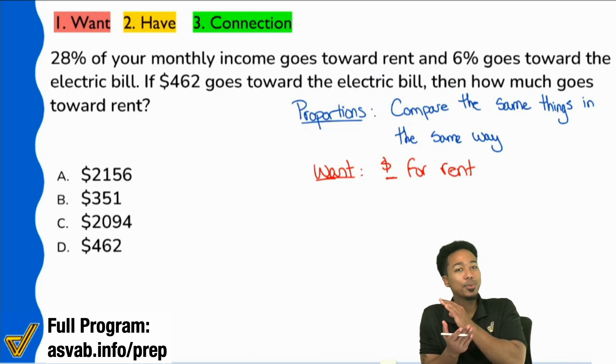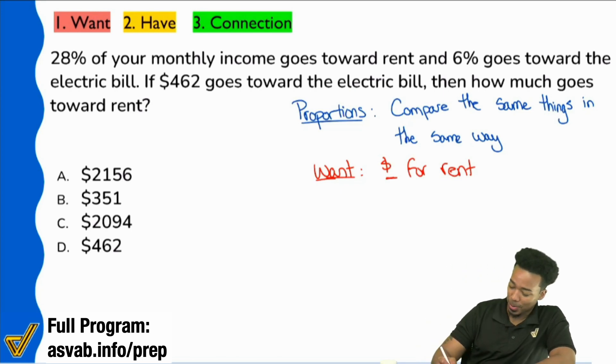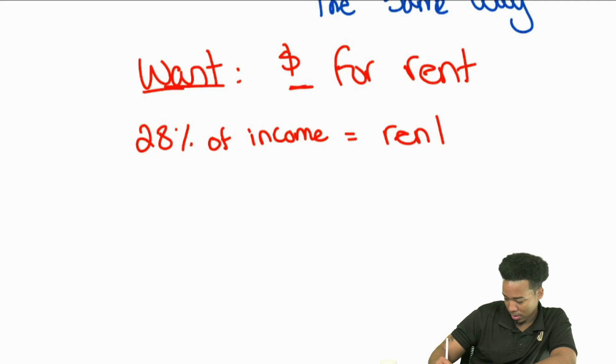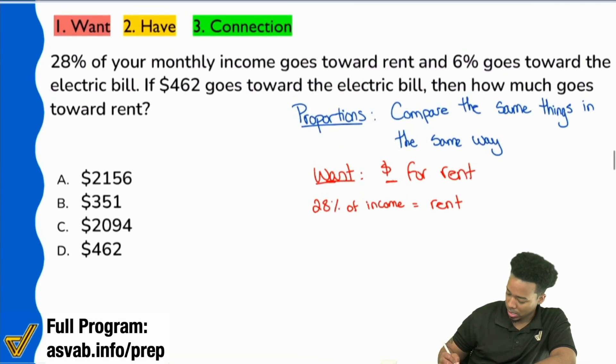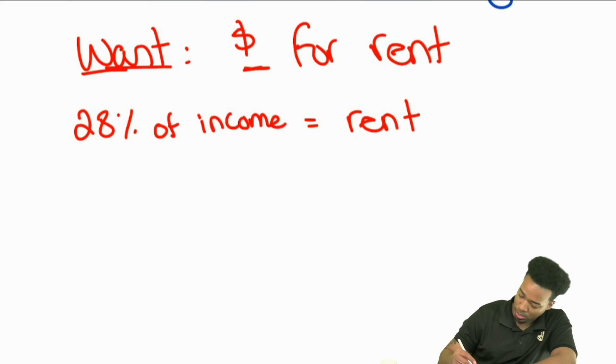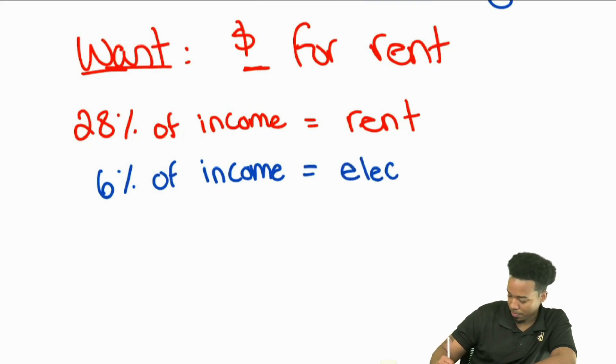So next, here's what we've got going on. Now, what I noticed in this question was that it says 28% of your monthly income goes towards rent. So let me write this down here: 28% of income equals rent. And then what does it say next? It says 6% goes toward the electric bill. Okay. Let me write that down: 6% of my income equals electric bill. So here on the left side, we have a percentage and on the right side, we have a utility bill.